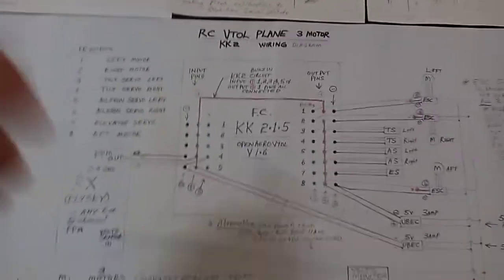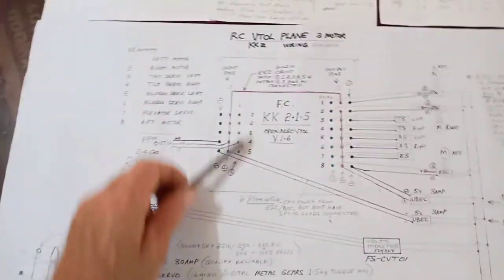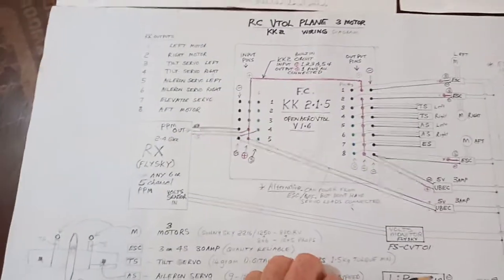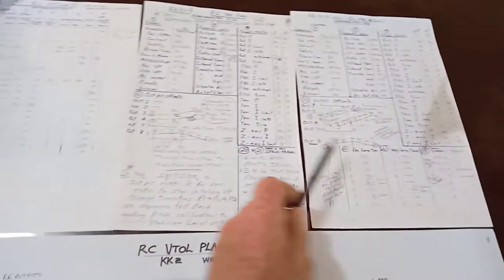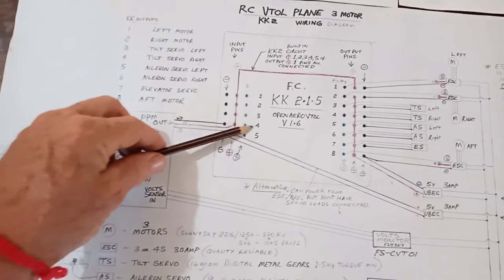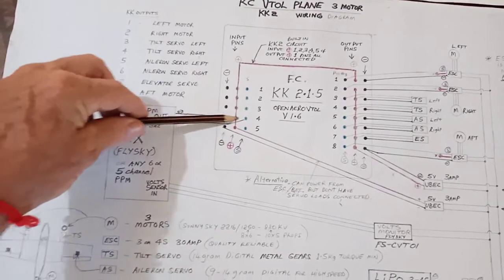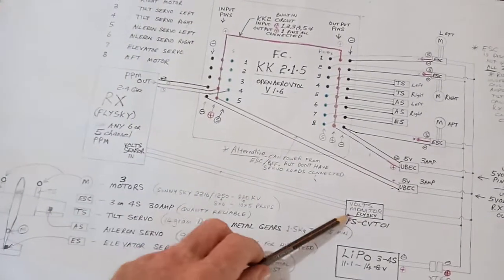This is the flight controller. It's a KK 2.0 and it has to be programmed. All of the program is here. I might do that on another video because that gets very complicated. But this is basically the wiring diagram. Your receiver connects into the pins, the input pin section.